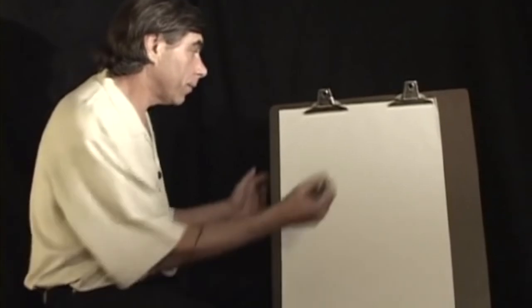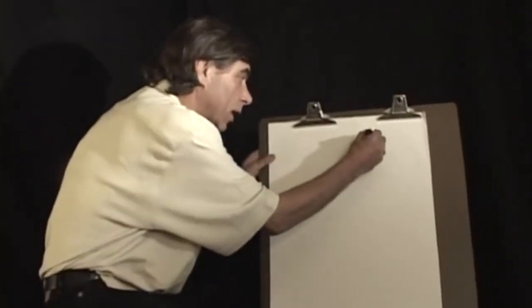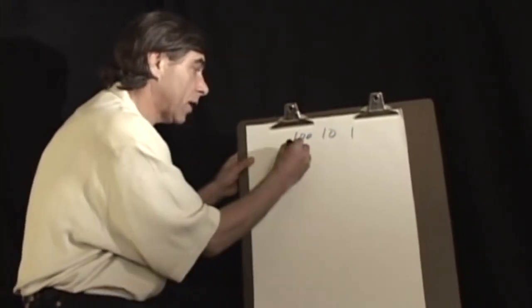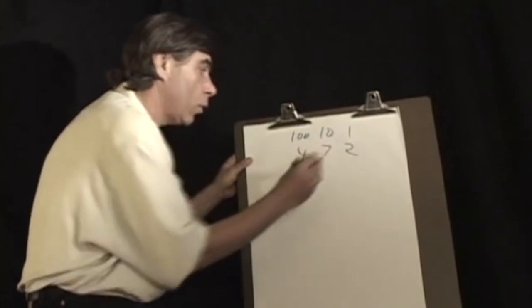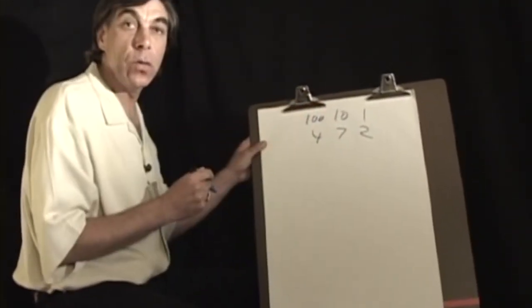Today when we write a number, we work in powers of ten and place value. We have the ones, the tens, the hundreds columns, so if you wanted to say 472, we're really saying four hundreds, seven tens, plus two ones.